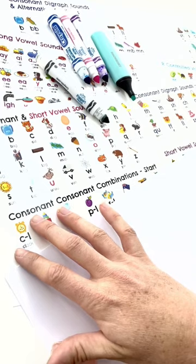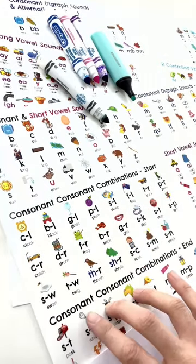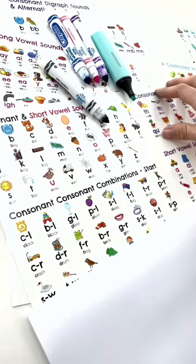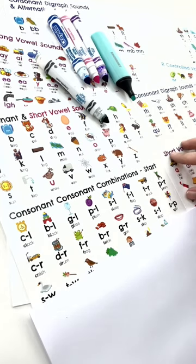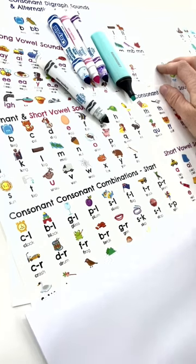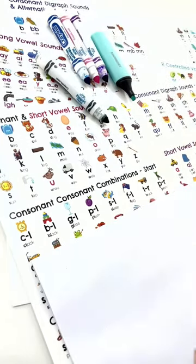Then moving on to our CCVC words and our CVCC words, introducing our digraphs, whether they're consonant digraphs, and then later we introduce the short vowel digraphs, long vowel digraphs, and R-controlled vowel digraphs. And then we've just got alternate spellings, which I have addressed here, but we tackle them later.